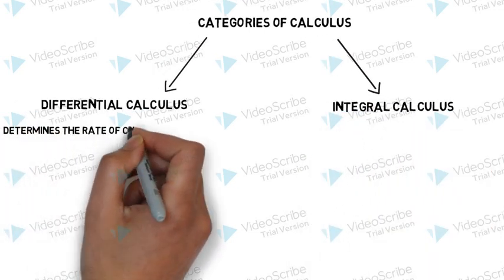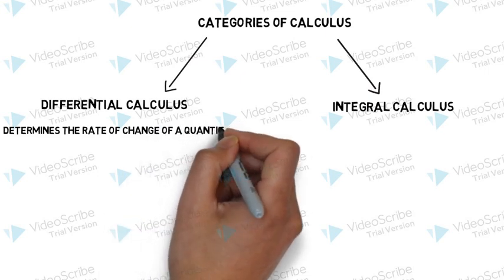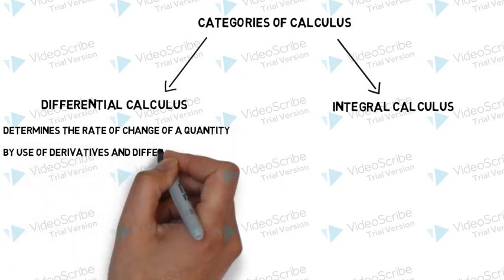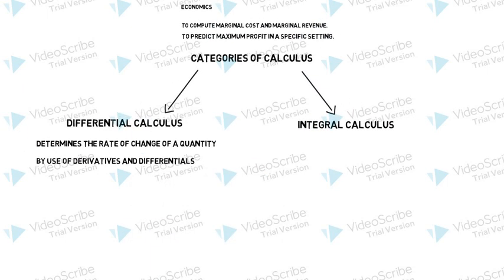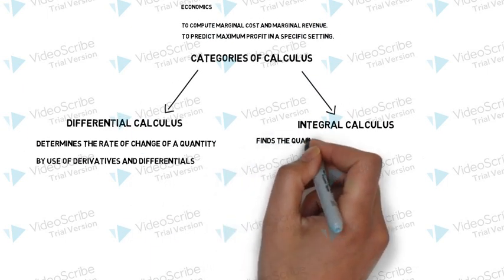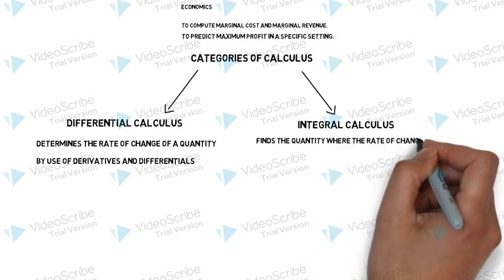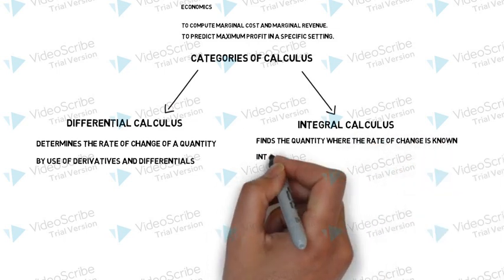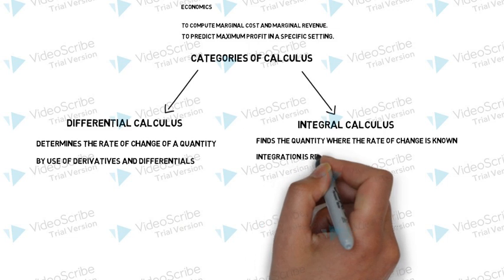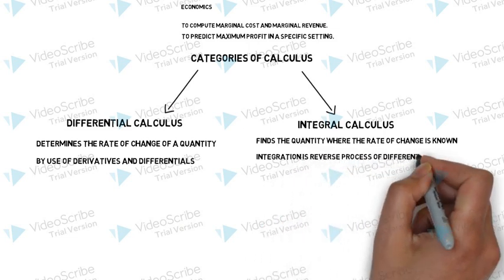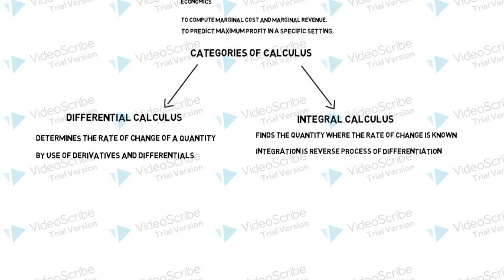Differential calculus determines the rate of change of a quantity by use of derivatives or differentials, whereas integral calculus finds the quantity where the rate of change is known. And we can say that integration is actually the reverse process of differentiation.